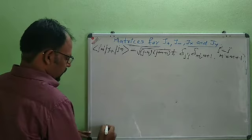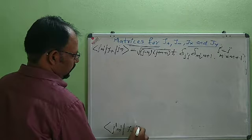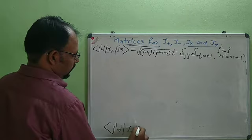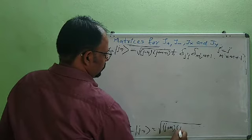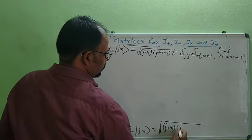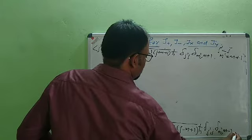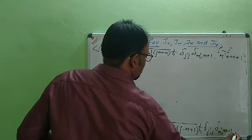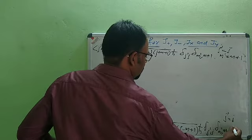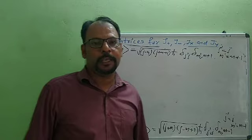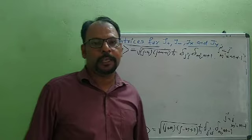Similarly, the matrix elements of J- are ⟨J',M'|J-|J,m⟩ = ℏ√[(J+m)(J-m+1)]·δ(J',J)·δ(M',m-1). Non-zero elements exist only when J' = J and M' = m-1. For J+ the condition is M' = m+1, while for J- it is M' = m-1.